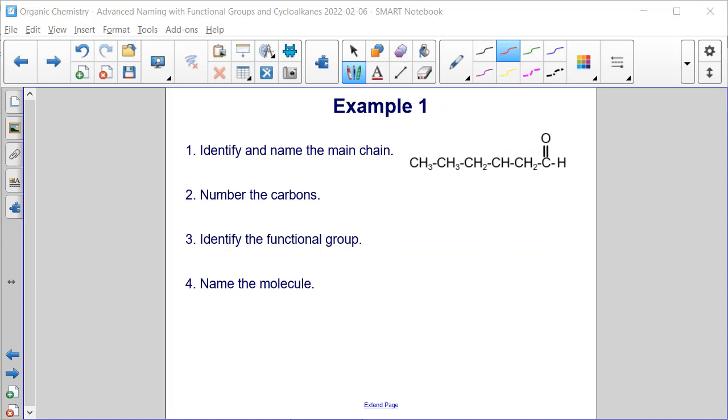All right, here's example one. We're going to write the name or name the molecule shown in the image. Let's start with identifying and naming the main chain. So our main chain is right here, just our carbons, right? And we have one, two, three, four, five, six of them. So our main chain will be hexane.